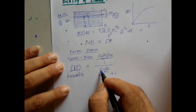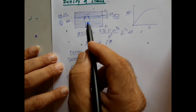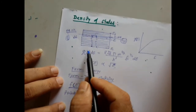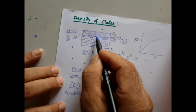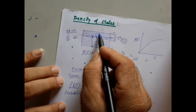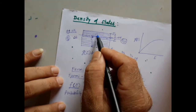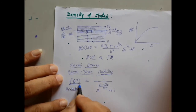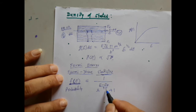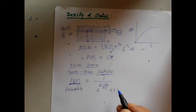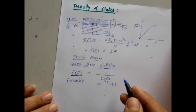In this expression, E is the energy of the electron, which can take any value depending on the conditions. EF is the Fermi energy, K is the Boltzmann constant, and T is the absolute temperature. This gives the probability distribution of electrons across various energy levels at any given temperature.